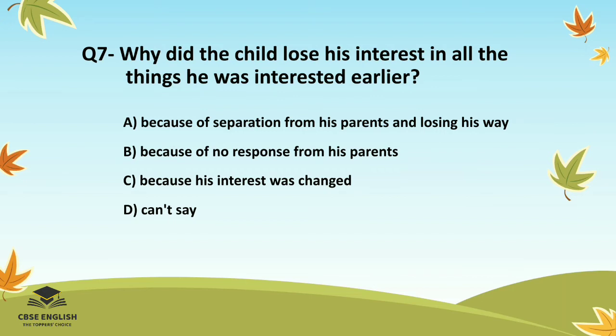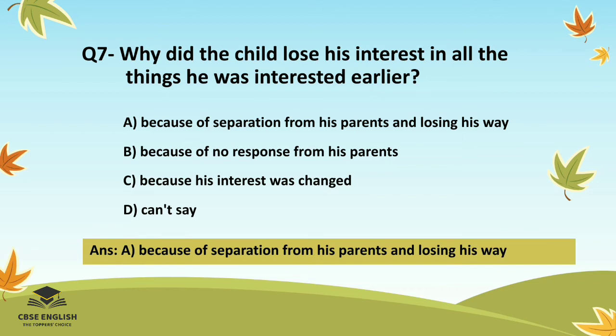Question number seven: Why did the child lose his interest in all the things he was interested in earlier? Options are: because of separation from his parents and losing his way; because of no response from his parents; because his interest was changed; or can't say. The correct answer is because of separation from his parents and losing his way.